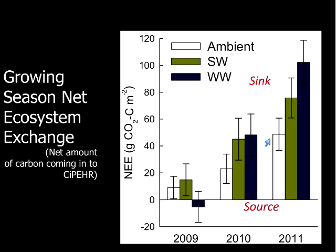During the growing season, plants take up CO2, so our graphs show CO2 concentration decreasing during the day as plants take in CO2. During the night when plants are not photosynthesizing but are still respiring — and microbes are respiring — CO2 concentration increases with time. This is a slide of some of the results: growing season net ecosystem exchange, showing the net amount of carbon coming into our CIPER plots. If we look at 2011, which is particularly important because our experiment had been running for three years at that point, we see that the winter warming plots and summer warming plots are taking in more carbon than the ambient control plots. Warming actually increased the amount of carbon our plots are taking in, which is really huge and important for the planet.